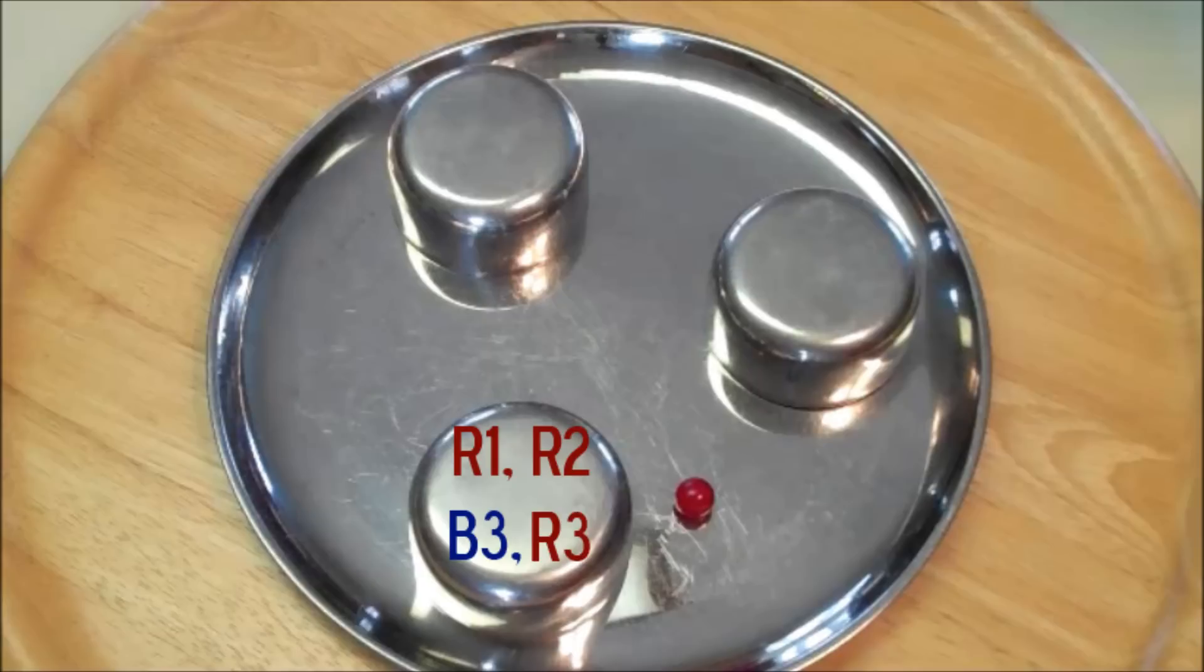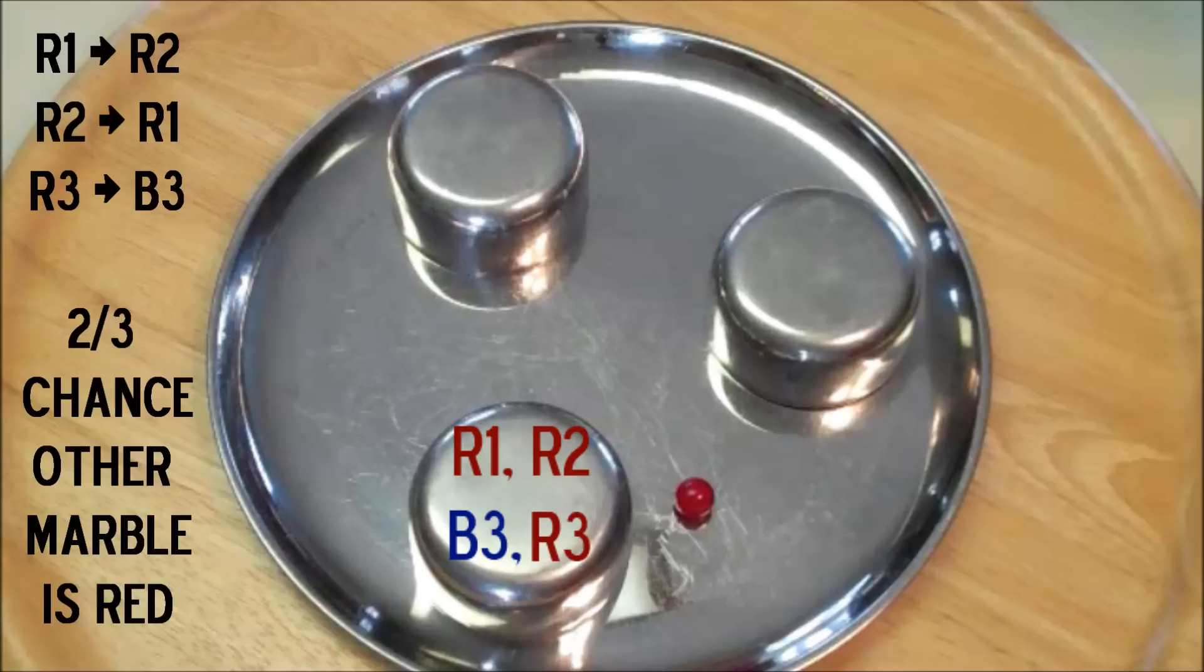So what we have is that this bowl is either red one and red two, or blue three and red three. Notice there are three ways to pick red marbles.